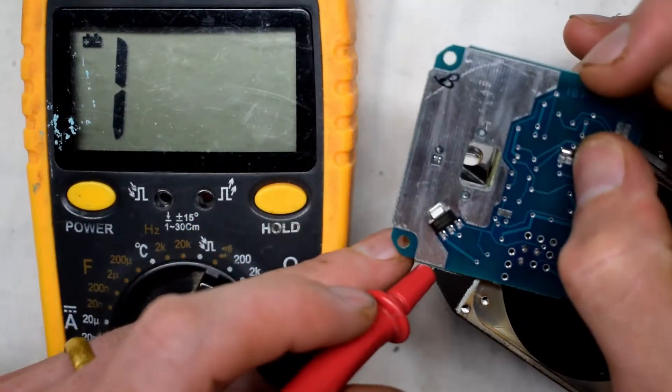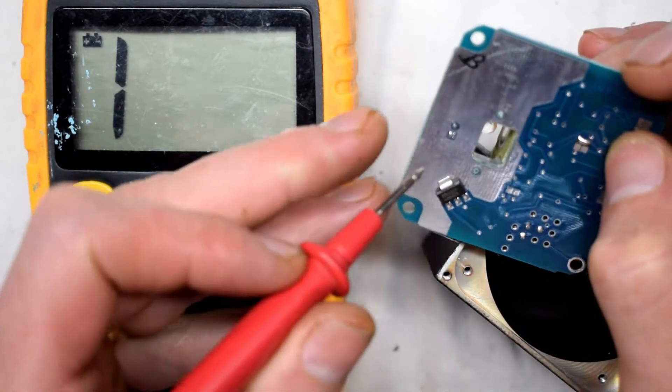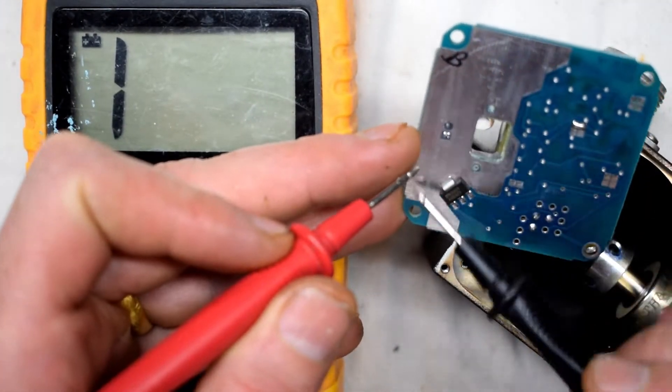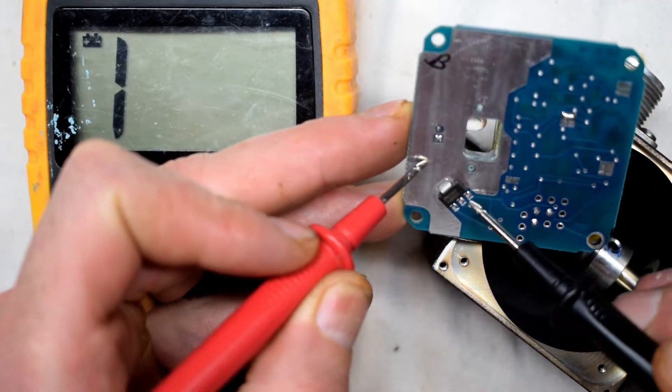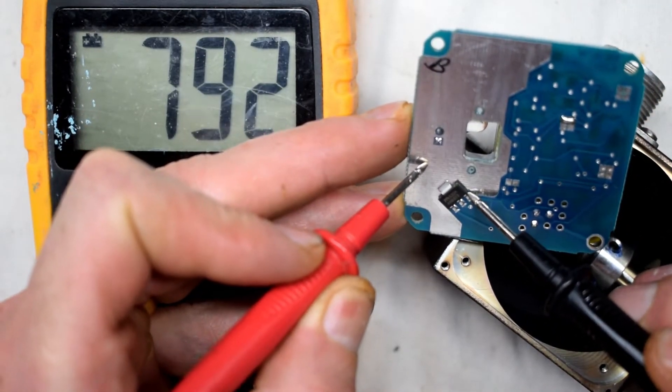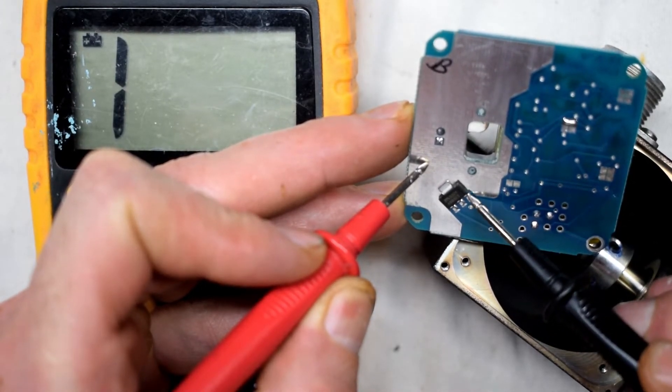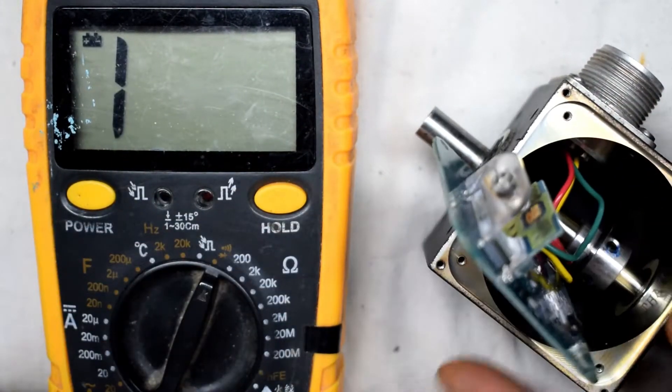And on the back we actually have a 5 volt regulator and this is all ground plane. So if you measure voltage from the ground plane to the third pin here and it's on, it should be 5 volts. So that's the internal.